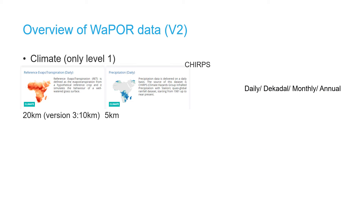The WAPOR database version 2 consists of various data products that support the monitoring of water use in agriculture. Most layers are available at each level, except for the climate layers in the form of precipitation and reference evapotranspiration, which are available only for level 1, but also at a coarser resolution due to the underlying resolution of the input data. The precipitation data has a spatial resolution of 5 kilometers and is derived from the CHIRPS dataset with some gap filling done. The reference ET data is created specifically for WAPOR and is available at 20-kilometer resolution. Both datasets are made available at daily, decadal, monthly, and annual time steps.